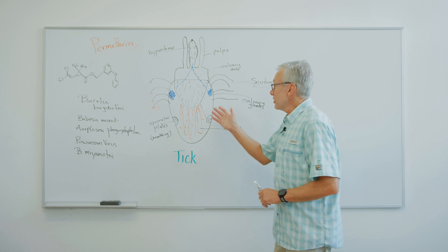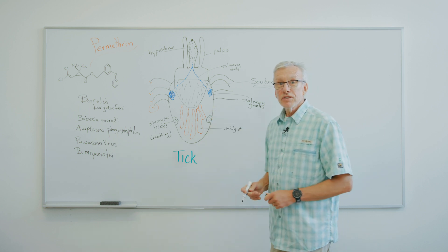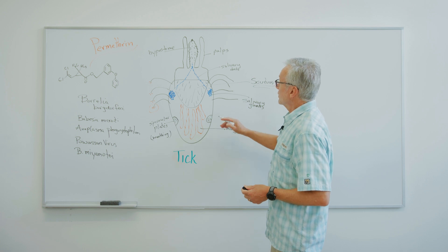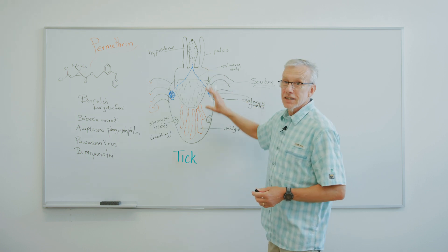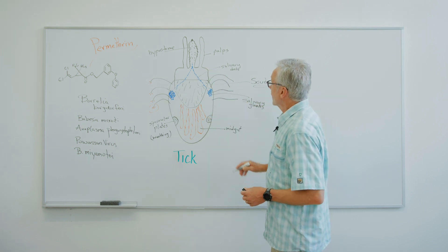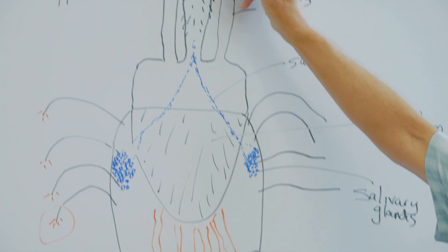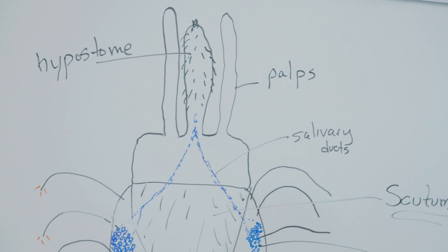Do you like my tick drawing here? You know, it's important to know a little bit about what makes up a tick. So there may be a little bit more complicated than you see with your eye. There's all kinds of features. The most important feature is this, this thing called the hypostome. That's what it sticks inside of you.